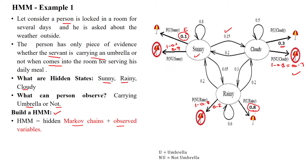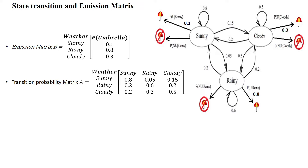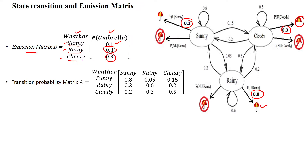These are the emission probabilities for each state. We now construct the emission probability matrix. We have three states — sunny, rainy, and cloudy. During sunny, the probability of carrying an umbrella is 0.1; during rainy it is 0.8; during cloudy it is 0.3. This gives us the emission probability matrix from the state transition diagram.